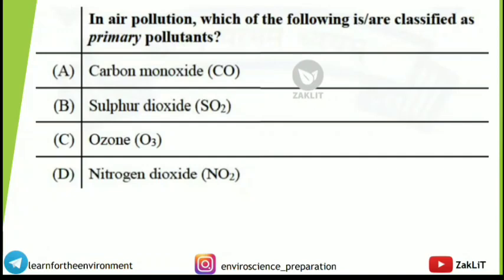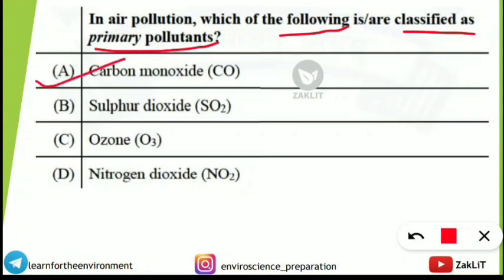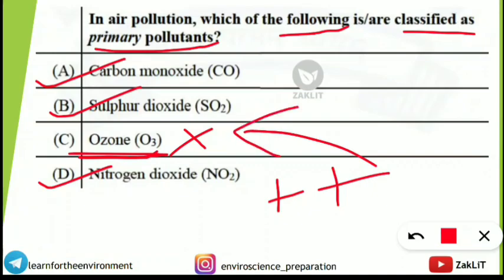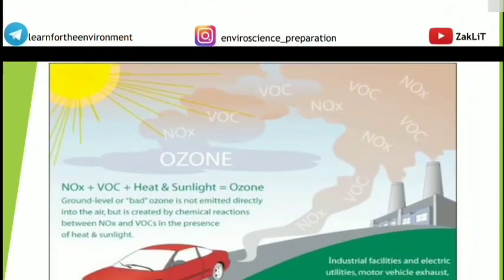The next question is very simple — basics of air pollution. Which of the following are classified as primary pollutants? Carbon monoxide, sulfur dioxide, and nitrogen dioxide are primary pollutants. However, ozone is not a primary pollutant — it is a secondary pollutant. It is formed when primary pollutants combine with other factors to produce secondary pollutants.